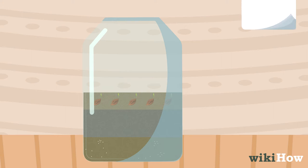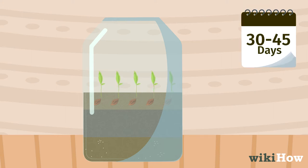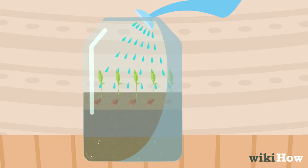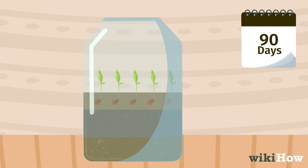Keep the soil moist and wait about 30 to 45 days for the seeds to sprout. Once they sprout, continue to water regularly until each seedling has about 2 leaves, which should take about 90 days.